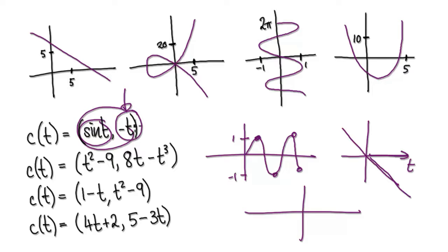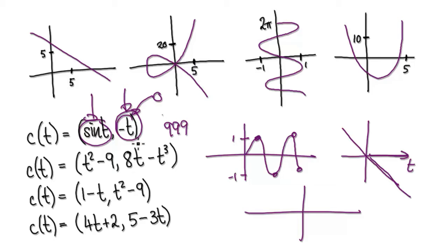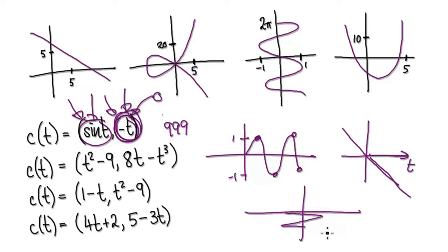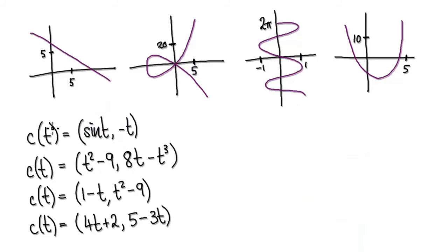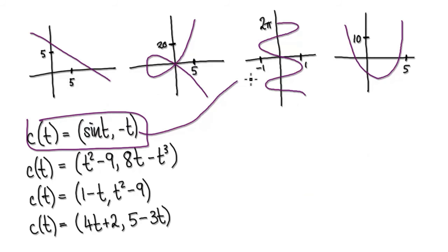So looking at this, there's only one graph from up here that describes this, because this thing here is oscillating back and forth. As you move time from 0 to, say, 999, it's just going to get larger and larger in the negative y direction. So this thing here is oscillating back and forth, and then as time goes on, the y just gets bigger and bigger — moving in the negative direction. In short, this thing here will trace out this graph. I will continue in the next video.